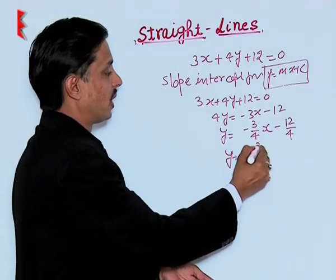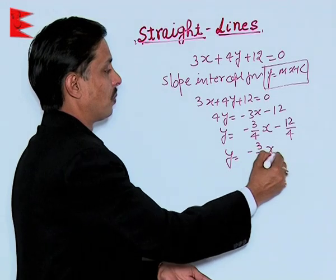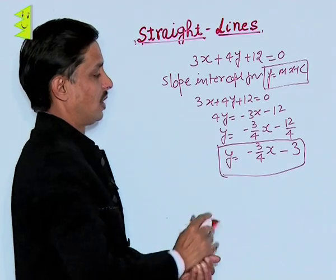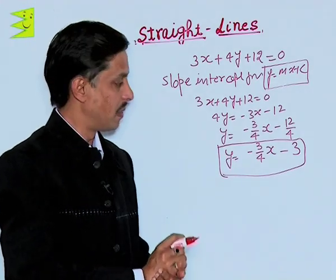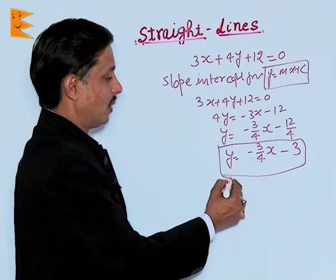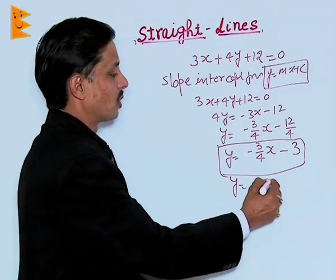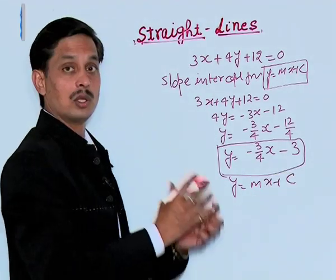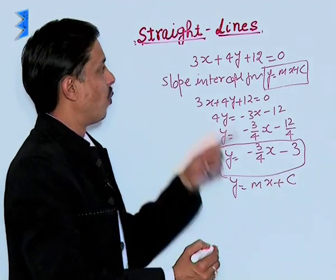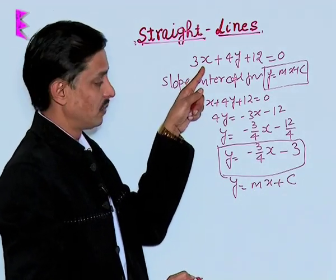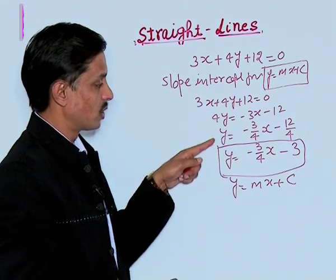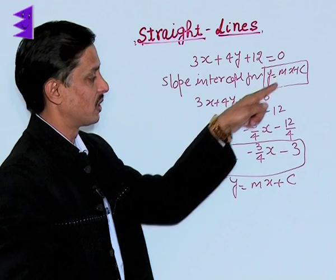The slope-intercept form of the given equation becomes y equals minus 3 upon 4 x minus 3. We can compare it with its standard form, y equals mx plus c. What question can I ask? What is the slope of this line? To find the slope,